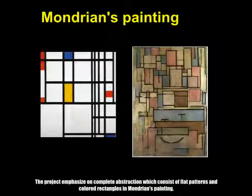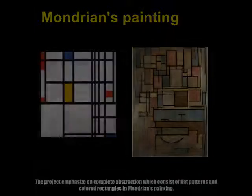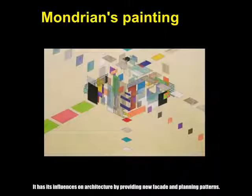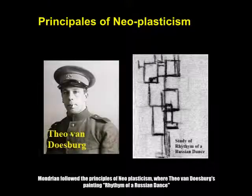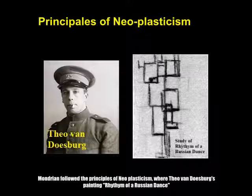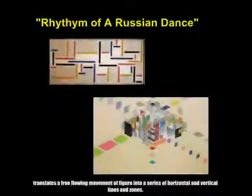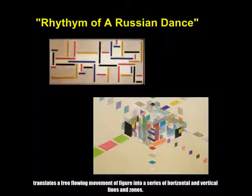In this project, Mies emphasized complete abstraction which consists of flat patterns and colored rectangles in Mondrian's painting. It has its influences on architecture by providing new facade and planning patterns. Mondrian followed the principles of neoplasticism, where Theo van Doesburg's painting, Rhythm of a Russian Dance, translates a free-flowing movement of figures into a series of horizontal and vertical lines and zones.